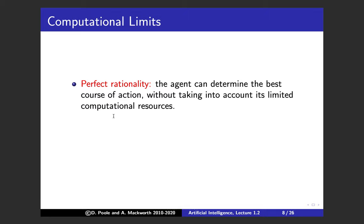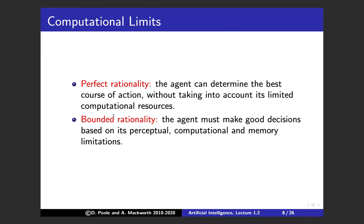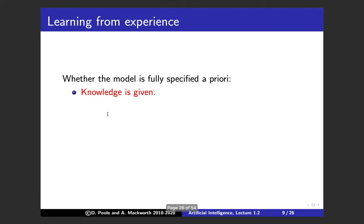The next dimension is computational limits — whether the agent can determine the best course of action without accounting for its limited computational resources. If we just ask for the optimal answer, that's perfect rationality. But agents aren't perfect: they must make good decisions given perceptual, computational, and memory limitations. They can't observe everything, can't compute forever, and have memory constraints. Taking these limits into account is called bounded rationality.